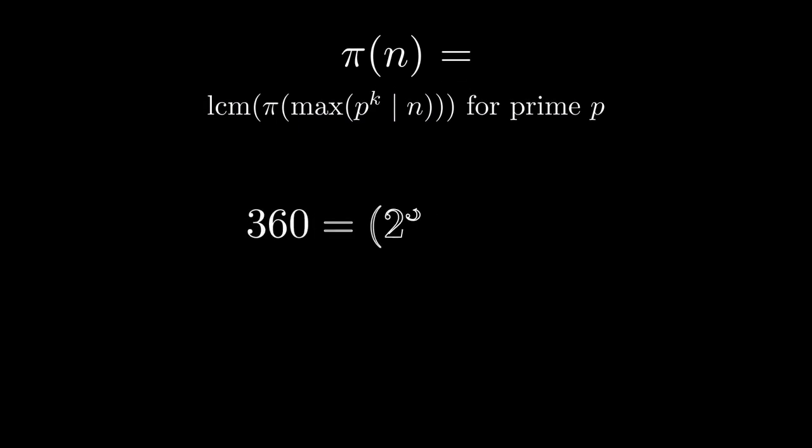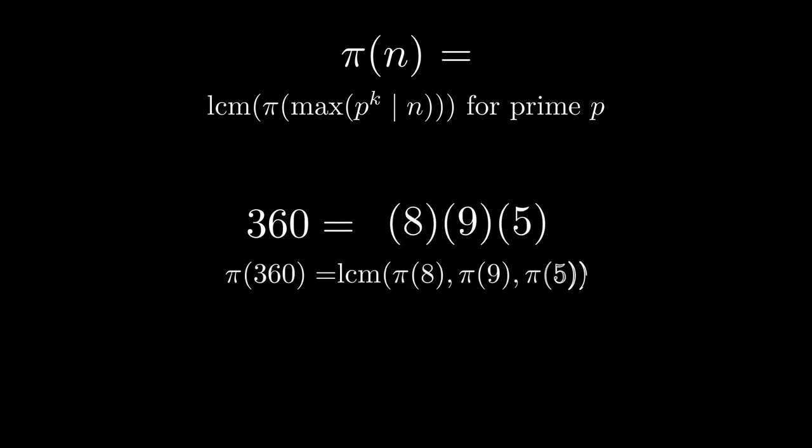So for instance, 360 is 2 cubed times 3 squared times 5, so pi of 360 is the least common multiple of pi of 8, 12, pi of 9, 24, and pi of 5, 20, which is 120.